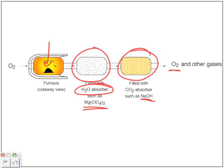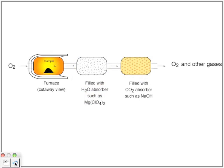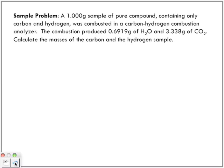We use such an instrument to make calculations about a specific compound. If you have a compound and you know it's some kind of hydrocarbon, you use a device like this to figure out the percent composition of each element, to help determine the empirical formula and ultimately the molecular formula of the compound.